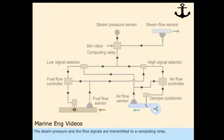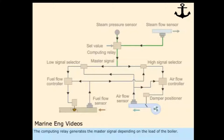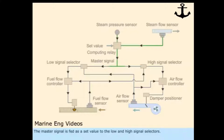The steam pressure and flow signals are transmitted to a computing relay. The computing relay generates the master signal depending on the load of the boiler. This master signal represents the fuel requirements to the boiler, and is fed as a set value to the low and high signal selectors.